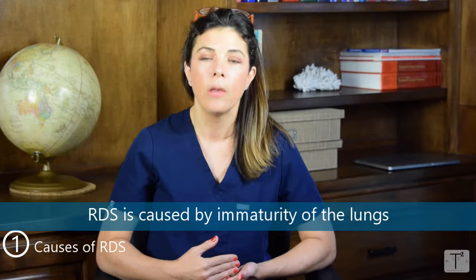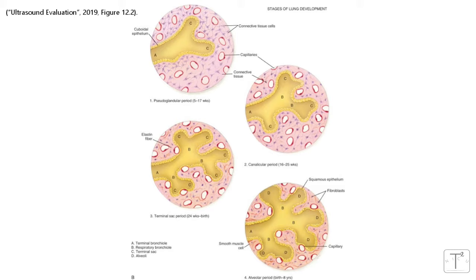The reason for that is what causes RDS is the immaturity of the lungs. The lungs are still really growing and developing in utero and even after birth. The saccular stage, which produces the respiratory bronchioles — really the first surface that can tolerate gas exchange — does not develop until about 24 weeks, which is why babies younger than 24 weeks are really not very good at surviving. The alveolar stage doesn't develop until 32 weeks.